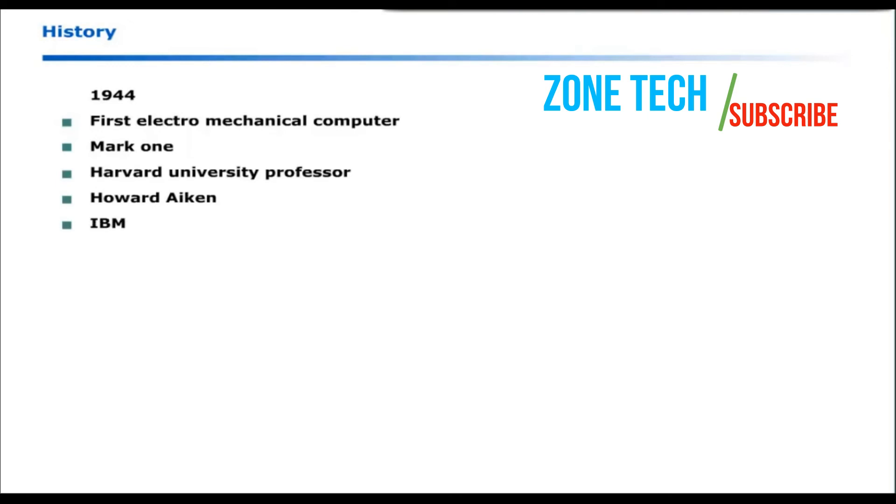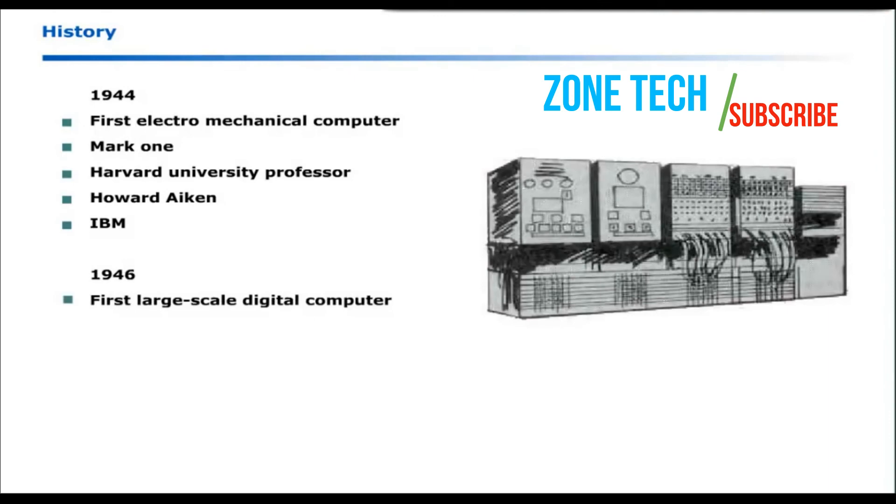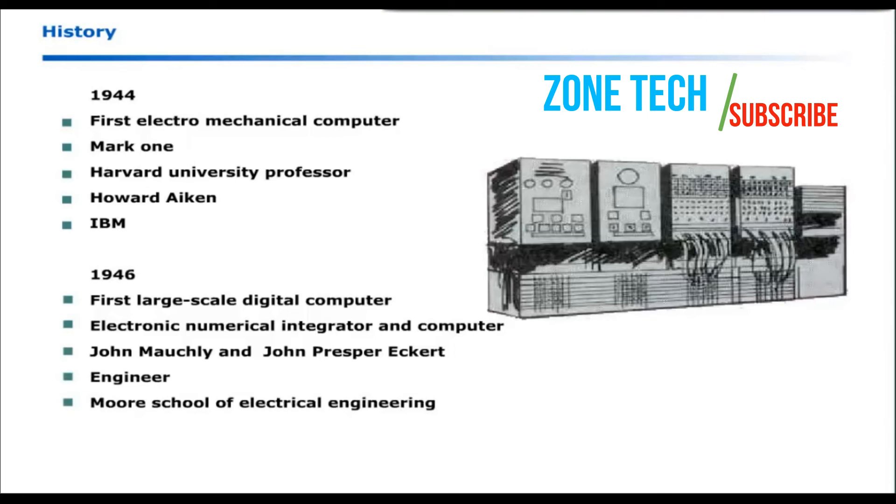IBM sponsored the development of this huge machine. In 1946, first large-scale digital computer, the electronic numerical integrator and computer, was developed. This was developed by John Mauchly and John Presper Eckert, an engineer at Moore School of Electrical Engineering in the University of Pennsylvania.